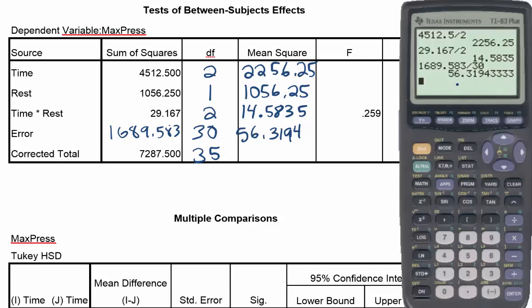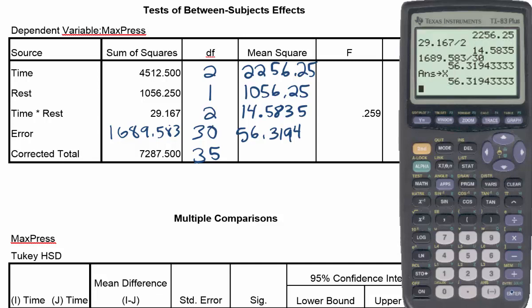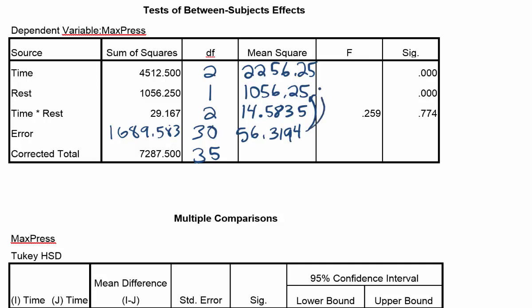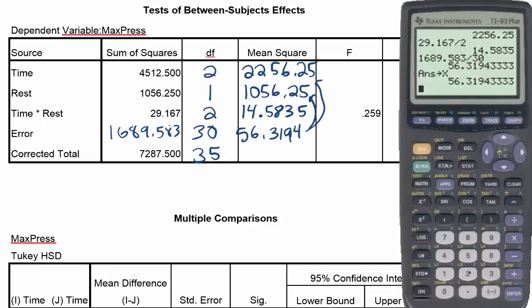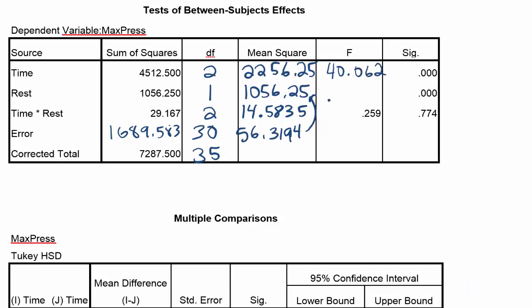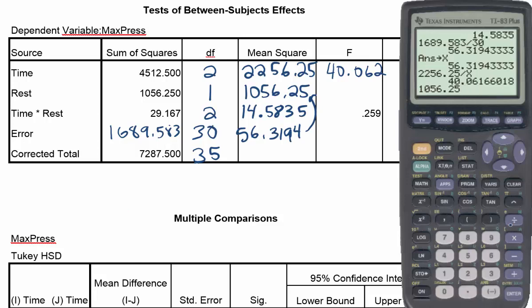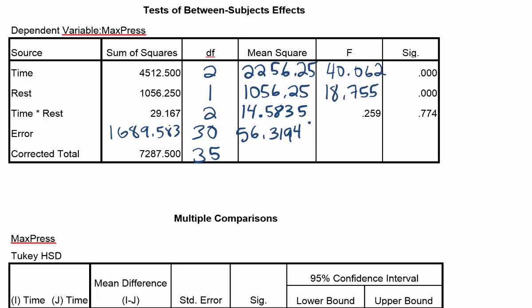Storing the error MS of 56.3194 in the calculator, I divide it into each factor's mean square to produce the F-test statistics. For time: 2,256.25 / 56.3194 = 40.062. For rest: 1,056.25 / 56.3194 = 18.755. The p-values for both of those F-statistics are significant, while the p-value for the interaction effect is not significant — confirming our interpretation of the marginal plots.